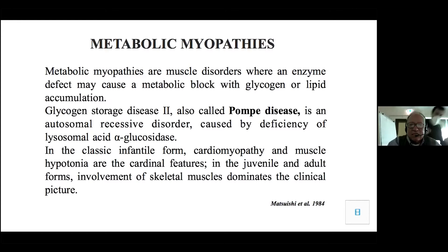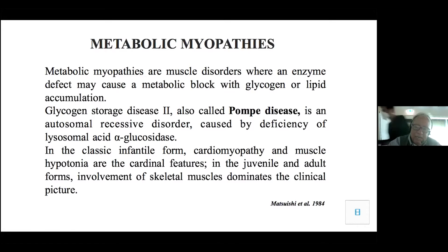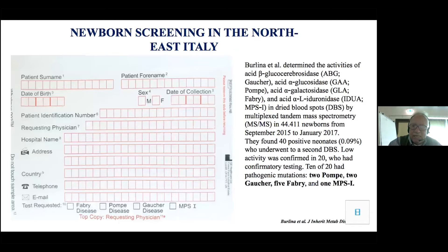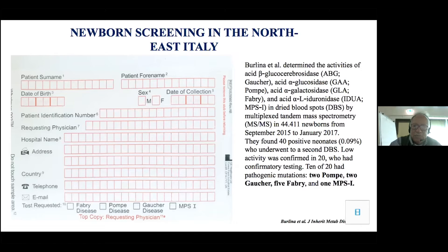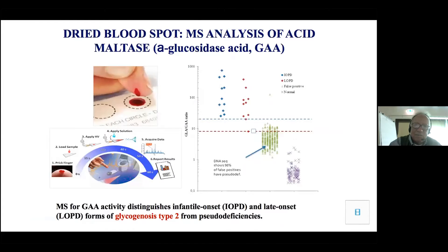There are three forms: infantile, juvenile, and adult. Nowadays the most advanced regions, as well as Taiwan and the United States, are organizing screening for these disorders because they are treatable. For instance, this is a Guthrie card where you can screen for Pompe, Gaucher, Fabry, and Mucopolysaccharidosis — done by blood collection on a piece of paper.